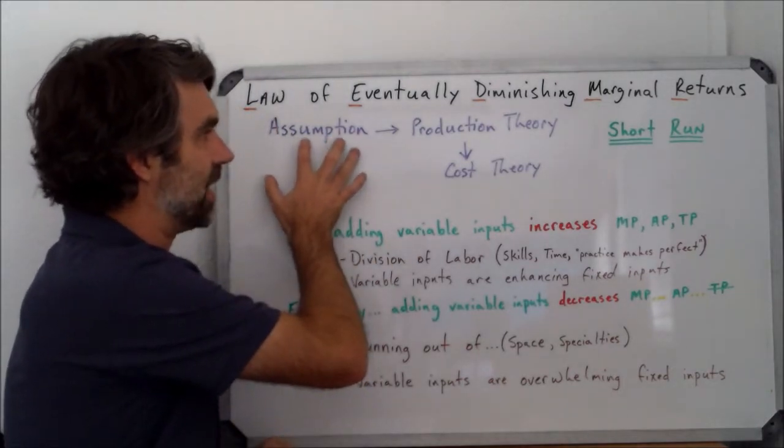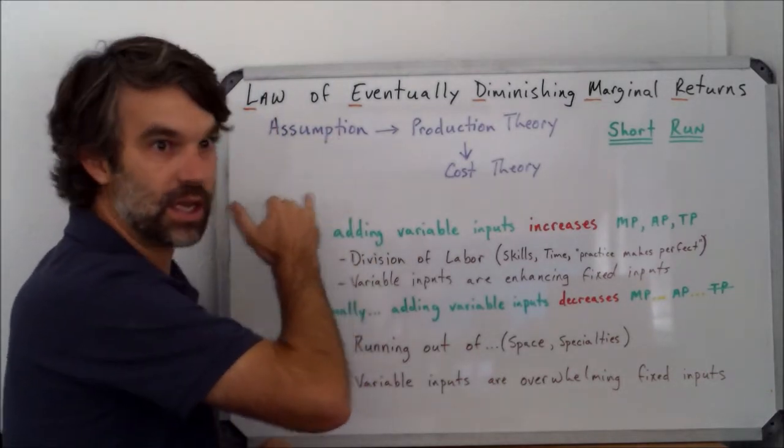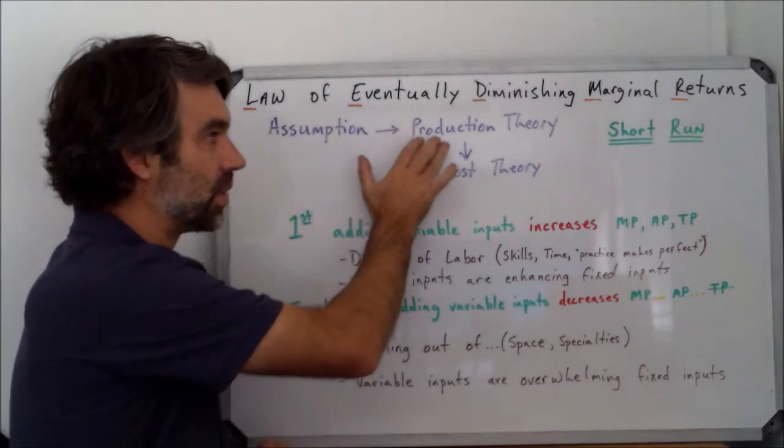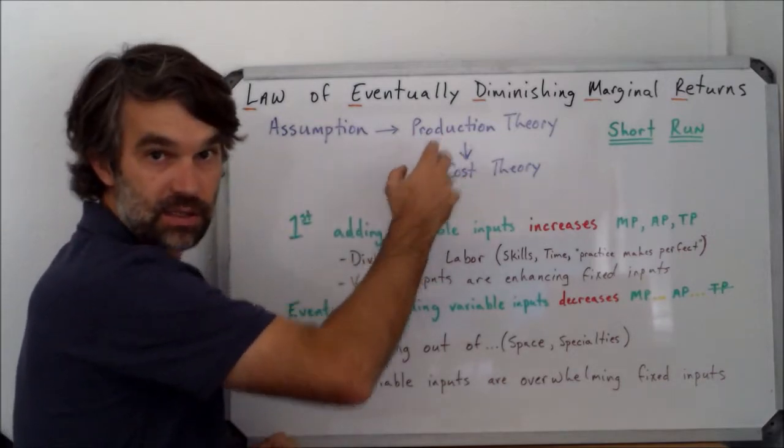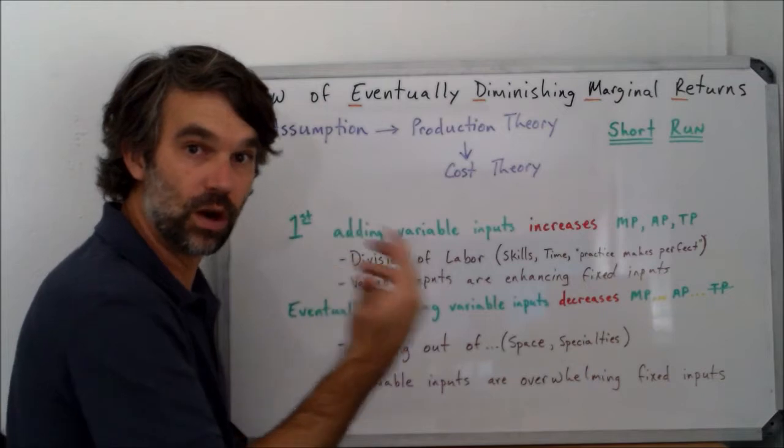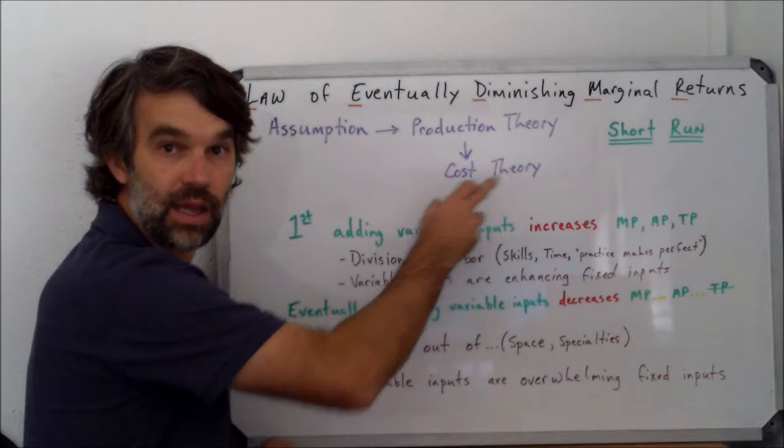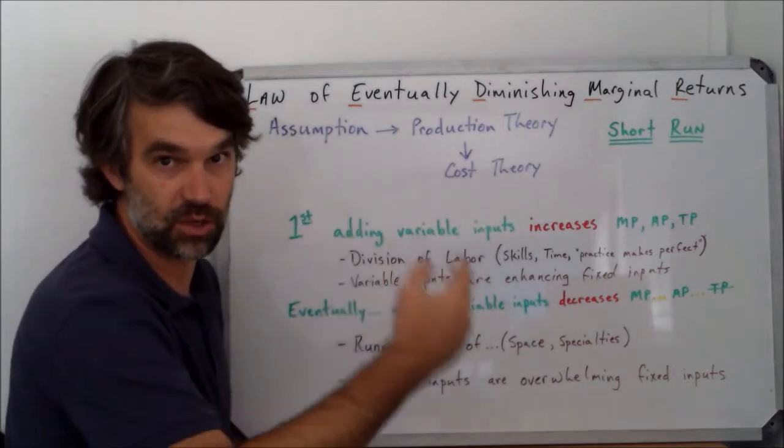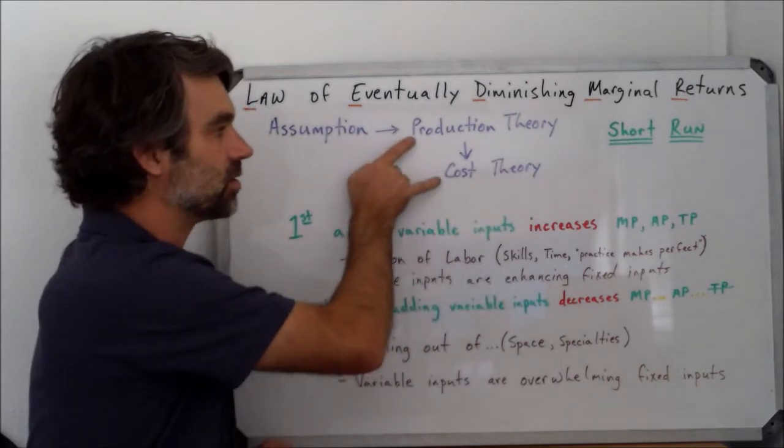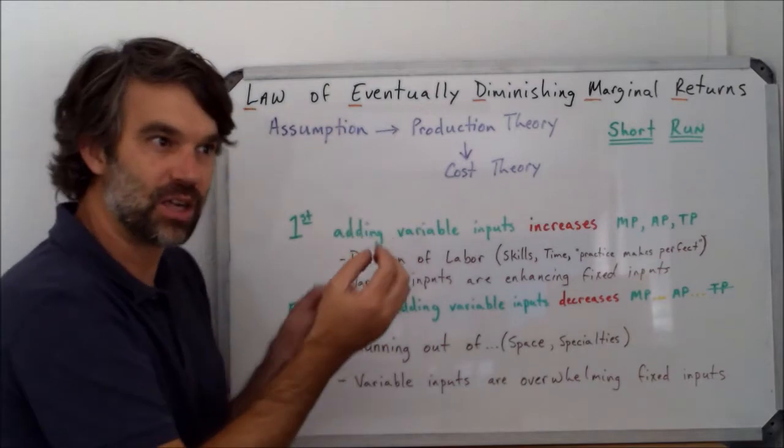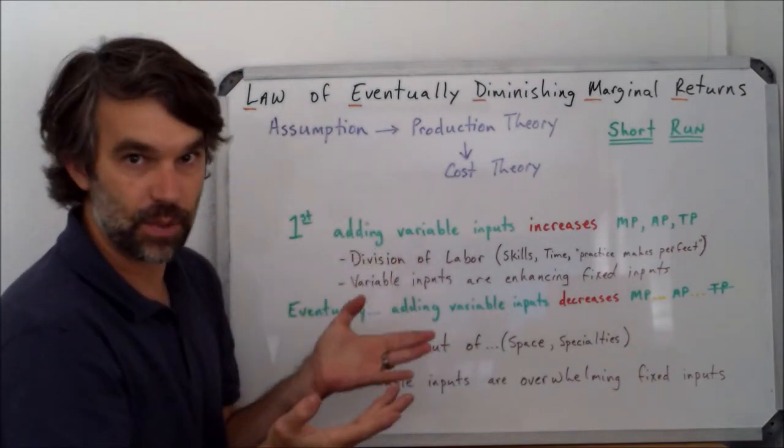It is an assumption, and it's the assumption that really forms the basis for what we call production theory—that is, how is it that we can produce more and more, which then in turn influences how we see cost theory: how much does it cost us to produce more and more? You'll see that these two are pretty much two sides of the same coin.